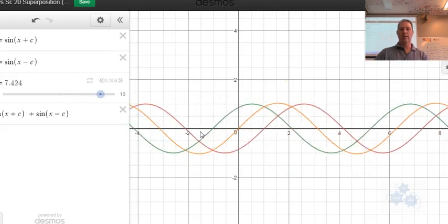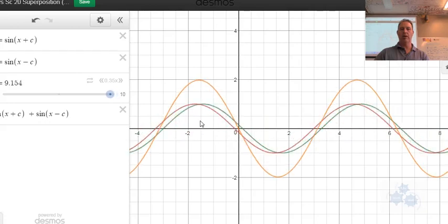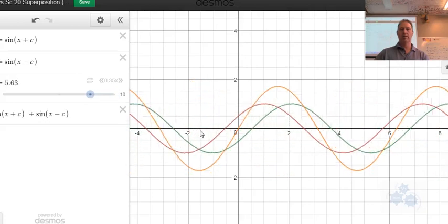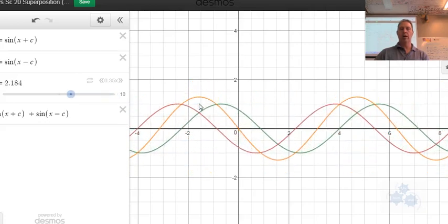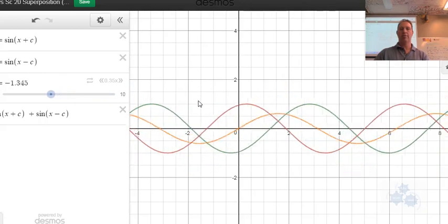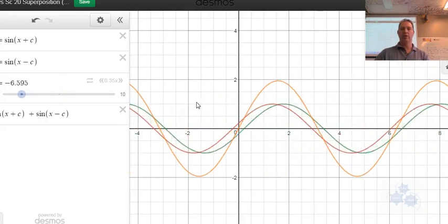Green plus the red, when it hits zero here, the orange is zero as well, you see, zero. When the green and the red hit positive one, like right here, the orange is always a two.